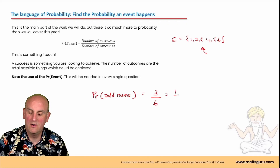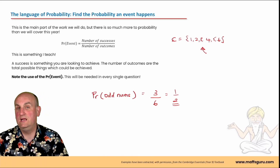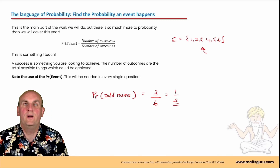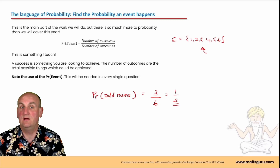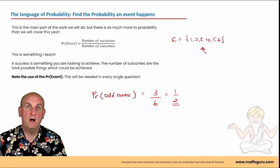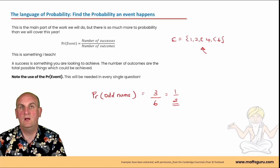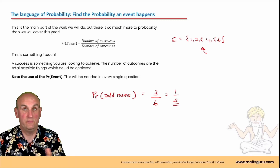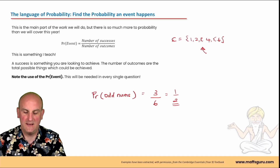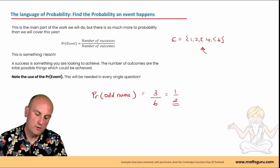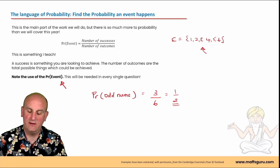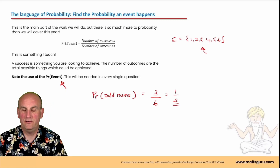You must always cancel down. If you don't cancel down - particularly in my exams - you won't get the marks. You are expected to finish it off. Check it and check it again. You must always write PR and in brackets the event; afterwards is then your answer.